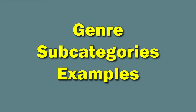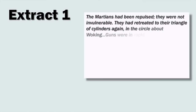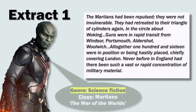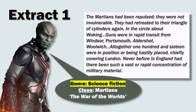Now let's take a look at genre subcategories with examples. Extract 1: The Martians had been repulsed. They were not invulnerable. They had retreated to their triangle of cylinders again, in the circle about Woking. Guns were in rapid transit from Windsor, Portsmouth, Aldershot, Woolwich. Altogether, 116 were in position or being hastily placed, chiefly covering London. Never before in England had there been such a vast or rapid concentration of military material. The genre here is science fiction. Clues: Martians. This is an extract from The War of the Worlds.